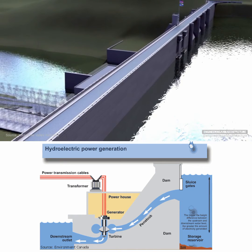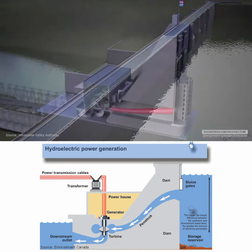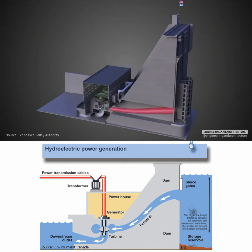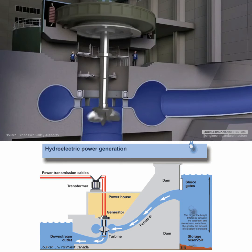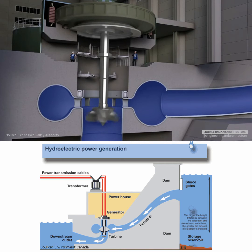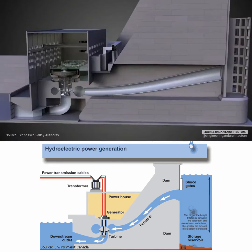Gravity causes the water to fall through a pipe inside the dam called a penstock. The falling water spins a turbine — a type of water wheel that converts the water's energy into mechanical power — which is located at the end of the penstock.